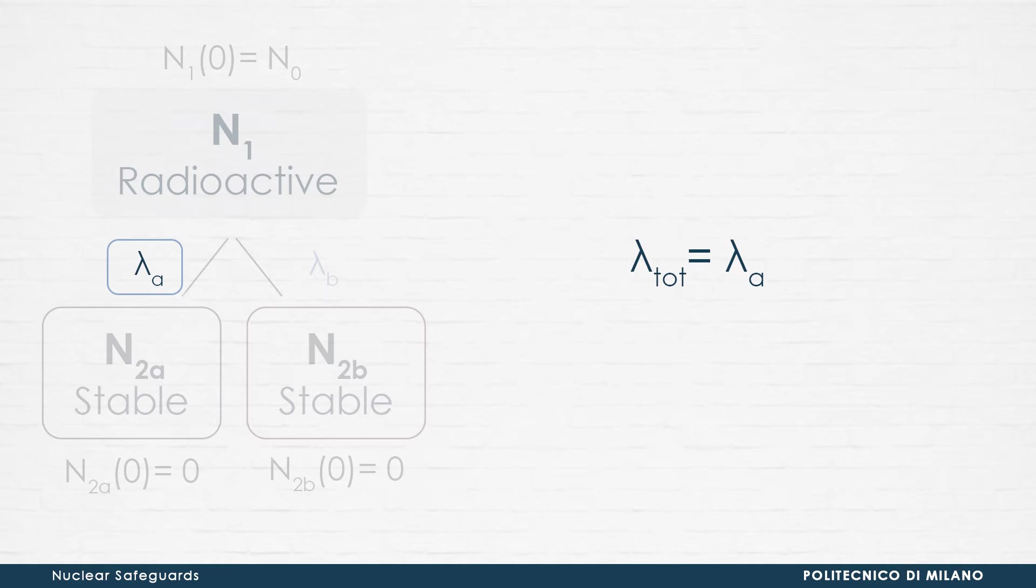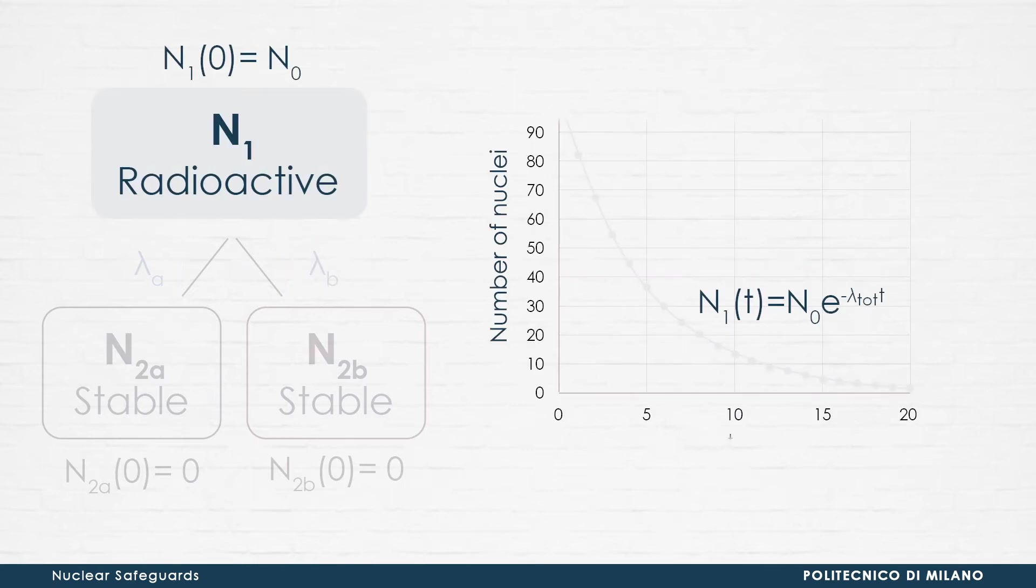can be expressed as the sum of the partial decay rate lambda A, associated to the way A, and partial decay rate lambda B, associated to the way B. The parent nuclei of type 1 will decay according to the exponential law already described before, the same its activity.